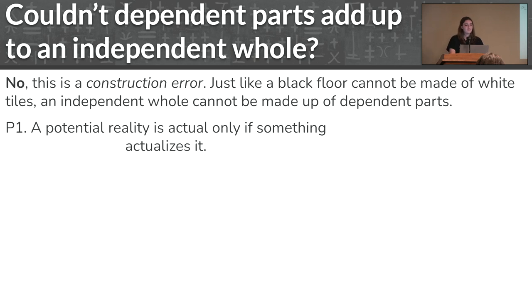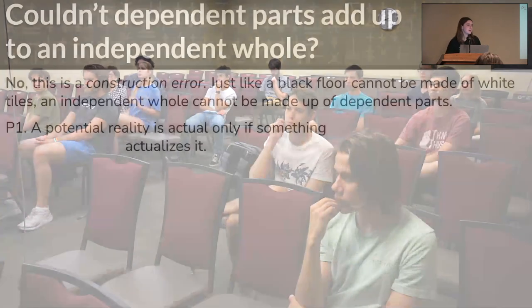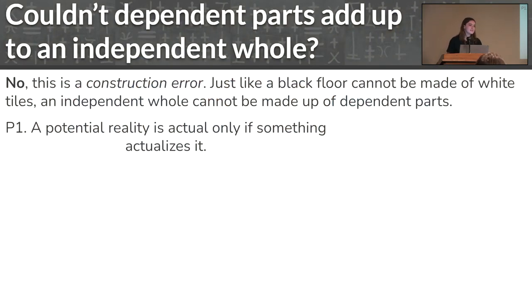So an actual argument to prove this is from potentiality and actuality. Does anyone know of that distinction? Just to make it clear, a potential thing is something that has to be brought into existence. For example, a drawing has to be brought into existence by myself. An actual thing is something that's already in existence, like you or me. A potential reality is only actual if something actualizes it. So something that has a cause, at least at some point in its life, is potential, and then it is caused and brought into actuality.